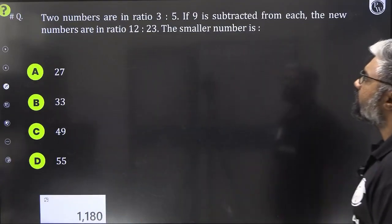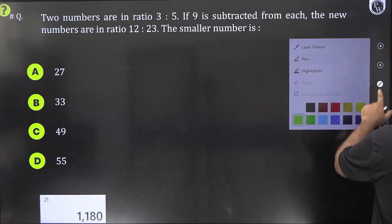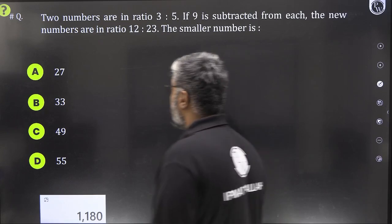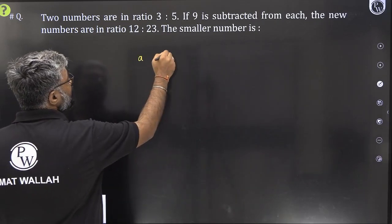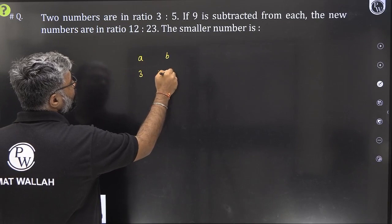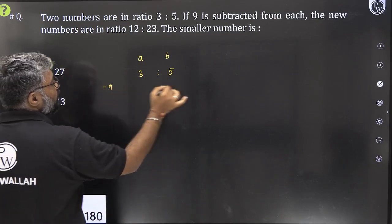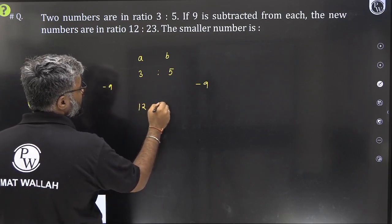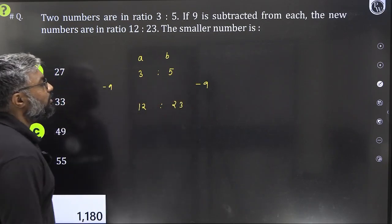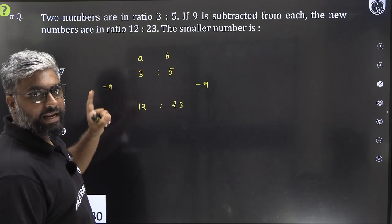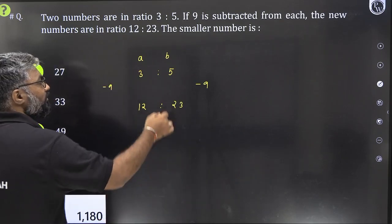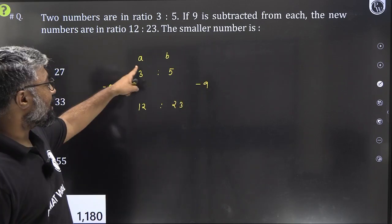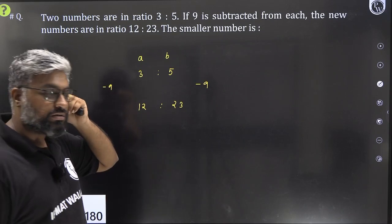Have a look at this. Two numbers are in the ratio 3 is to 5. 9 is subtracted from both. The new numbers are in the ratio 12 is to 23. What is the smaller number? We have two numbers. Let's say A and B. They are in the ratio 3 is to 5. They are saying 9 is subtracted from both. 9 is subtracted from both. We get the new ratio to be 12 is to 23. Mind you, you cannot do 3 minus 9 minus 6 directly. Please be very careful. 5 minus 9 minus 4 directly. You can't do it. Why? Because these are not actual numbers. These are the ratios.